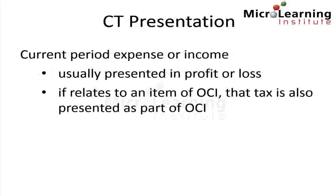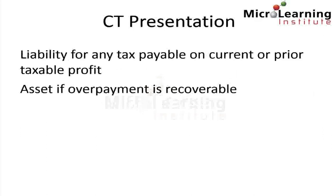We present current tax usually in the profit and loss, or if it relates to an item of other comprehensive income, that tax is also presented as part of other comprehensive income. We present a current tax liability for any tax payable on current or prior taxable profit. We present a current tax asset if an overpayment is recoverable in future periods.